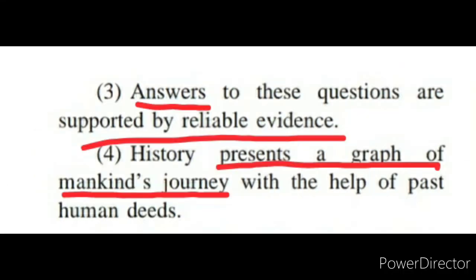The third characteristic is that answers to the questions we have framed should be supported by reliable evidence — evidence should always be present. The fourth characteristic is that history presents a graph of mankind's journey with the help of past human deeds. We get a graph showing how man has been progressing in this world, from the Stone Age to the modern age — how through inventions like the wheel, humans are now reaching space. So history gives us that overall graph.